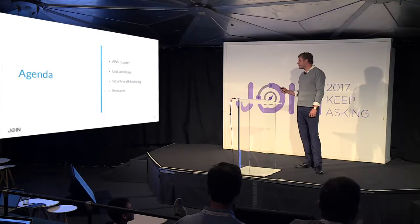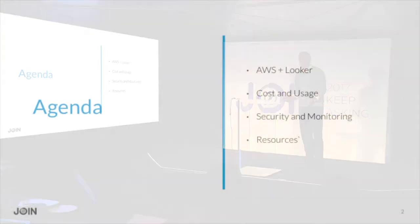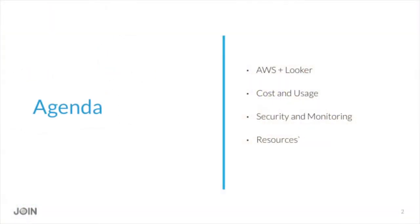I'm going to be talking about a few things today. First, I'll go over a quick background on the relationship we have with AWS. Then I'll dive into the more interesting stuff — cost and usage, and security and monitoring for your AWS environment. And lastly, we'll leave you with some resources including step-by-step guides on how to implement all this stuff, how to interpret the analysis, all that good stuff.